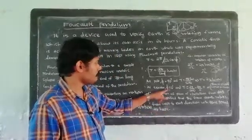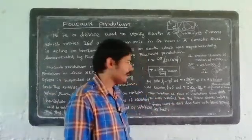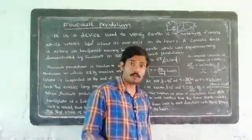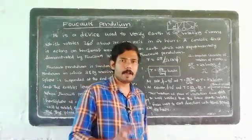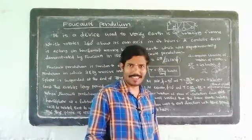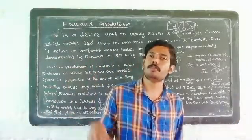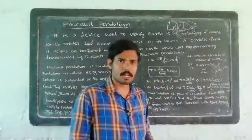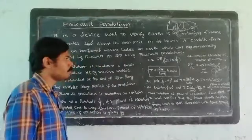At the equator, φ = 0 degrees, so T = 24 / sin 0° = 24 / 0, which is infinity. A time period of infinity means the plane of oscillation never completes one full rotation — it does not change. Therefore, the Foucault pendulum at the equator will show no rotation of the plane of oscillation.